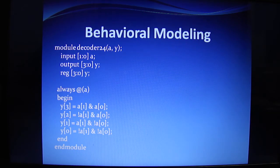Then we are writing the always block, always @(a), because our output is totally dependent on any change in our input. So we are writing the variable a in the sensitivity list of the always block.